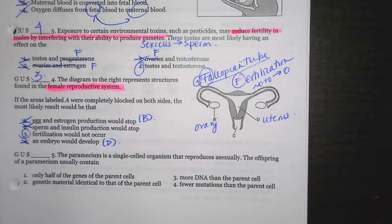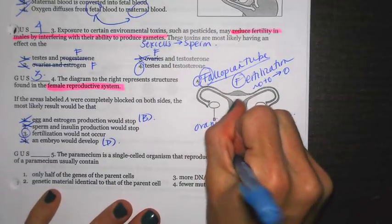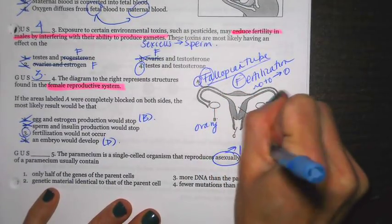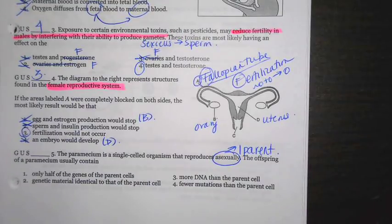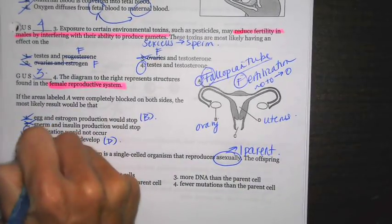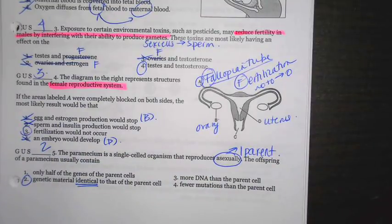Next up. A paramecium is a single-celled organism that reproduces asexually, meaning one parent without sex cells. The offspring of paramecium would usually contain genetic material that is identical to the parent. There's only one parent, so they get all their DNA from one parent cell.